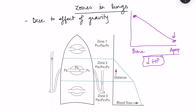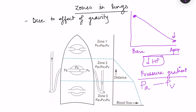The driving force for blood flow is the pressure gradient. Blood flow requires a pressure gradient; even if pressure is high everywhere, flow won't occur without a gradient. Normally, the gradient is pulmonary arterial pressure minus pulmonary venous pressure (equivalent to left atrial pressure). However, alveolar pressure also affects capillary diameter and thus blood flow.